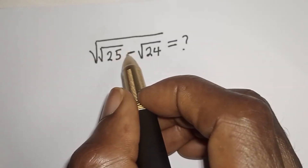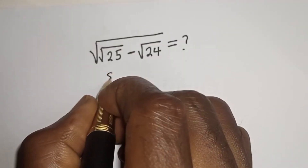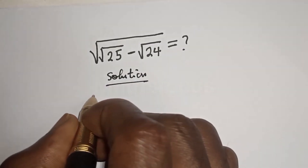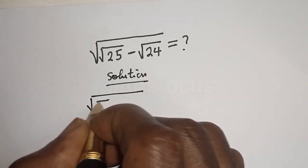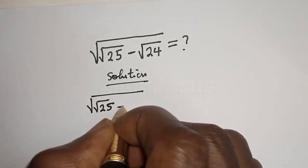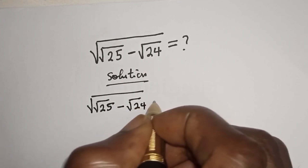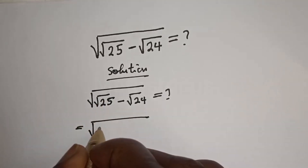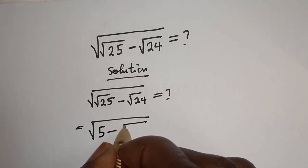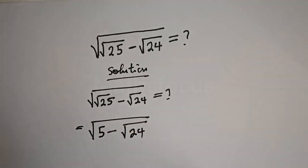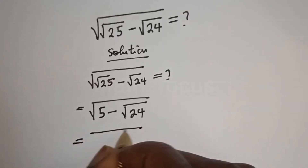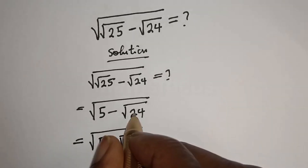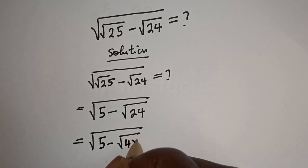The problem is: square root of (square root of 25 minus square root of 24). This equals square root of (5 minus square root of 24). We can write square root of 24 as square root of 4 multiplied by 6.